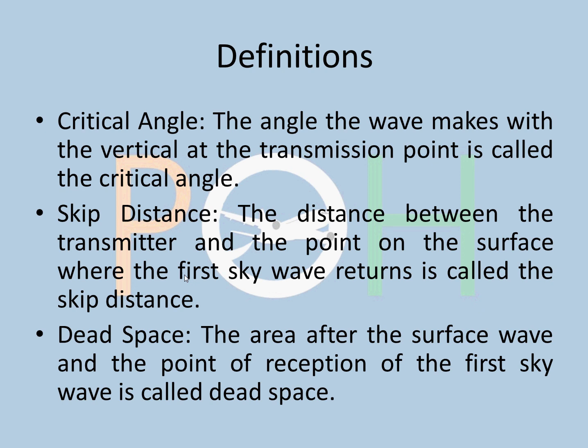These are the definitions I wanted to give you for you to note down. Critical angle: the angle the wave makes with the vertical at the transmission point is called the critical angle, basically when the first sky wave returns. Beyond that, it will become escape rays, and all the angles below the critical angle, the sky waves will return. Skip distance: the distance between the transmitter and the point on the surface where the first sky wave returns is called the skip distance. Dead space: the area after the surface wave and the point of reception of the first sky wave is called dead space. So that's all about radio propagation and radio propagation theory.